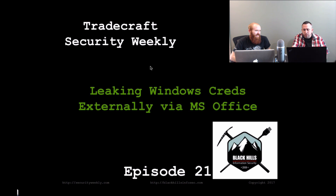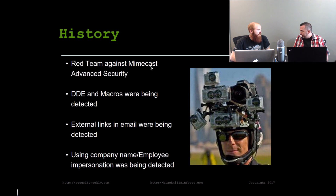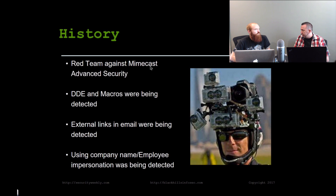So a little bit of background. I was recently on a red team and we were up against some pretty good security controls. They were running Mimecast for email and actually had the advanced security suite. They're blocking a lot of your typical document payloads — DDEs, macros — everything was being detected and kicked back. External links were getting blocked, impersonating employees was getting blocked. So we were kind of up against the beast externally as it relates to phishing.